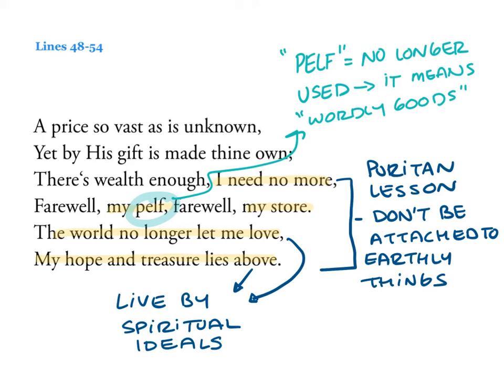Let's bring it home, Anne Bradstreet. 'A price so vast as is unknown, yet by his gift is made thine own. There's wealth enough, I need no more. Farewell my pelf, farewell my store. The world no longer let me love. My hope and treasure lies above.' Here we have a big Puritan lesson: don't be attached to earthly things and live by spiritual ideals. Her use of anastrophe in 'the world no longer let me love' should read 'don't let me love the world anymore' — drawing our attention to the point she's making: live by our spiritual ideals. It's actually pretty cool how she does that.